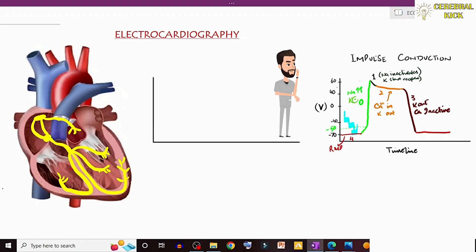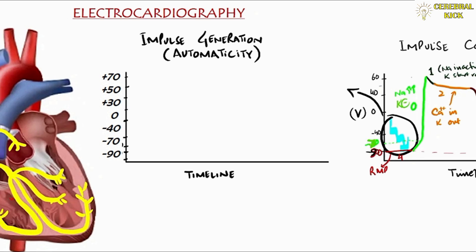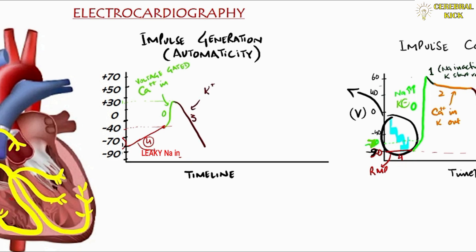A question arises: how does the heart automatically generate this impulse? This is the automaticity of the heart. These specialized cells, once at resting membrane potential, have leaky sodium channels which move sodium inside the cell, causing the membrane potential to continuously move toward positive until it reaches minus 40 — the threshold level. This is where calcium channels open, causing spontaneous depolarization. After that spontaneous depolarization, the calcium channels are inactivated, and the phase moves into repolarization where potassium moves out. But the membrane potential never goes below minus 60 because of the leaky sodium channels — so these cells do not require any external stimulus to depolarize. This is the automaticity of the heart.